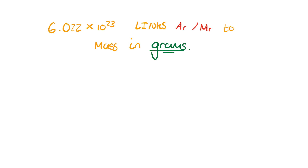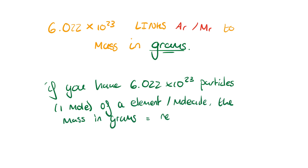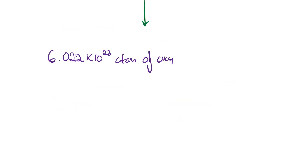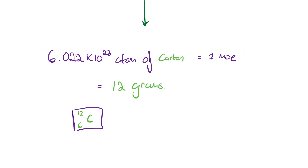If you have 6.022 × 10²³, or 1 mole of a molecule or atom, its mass in grams is the same as its relative atomic or relative molecular mass. Oxygen has a relative atomic mass of 16. If you had 1 mole of oxygen — 6.022 × 10²³ atoms of oxygen — its mass would be 16 grams. Carbon's relative atomic mass is 12, so 1 mole of carbon would be 12 grams.